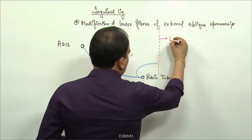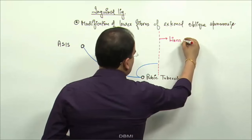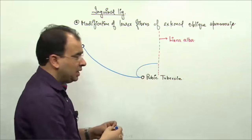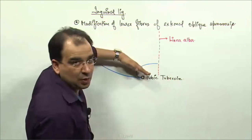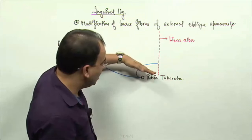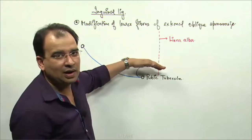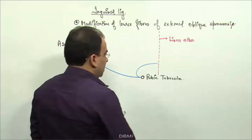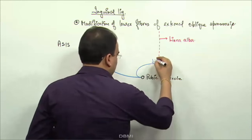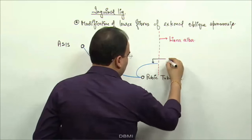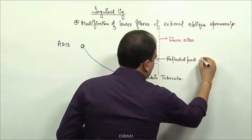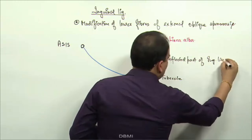This reflection of the inguinal ligament goes behind the inguinal canal. So when we talk about the boundaries of the inguinal canal, you will find this reflected part is present behind the inguinal canal on the medial side. This reflected part of inguinal ligament is one modification.